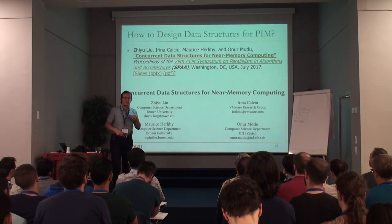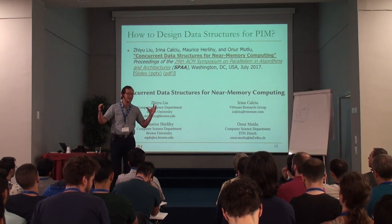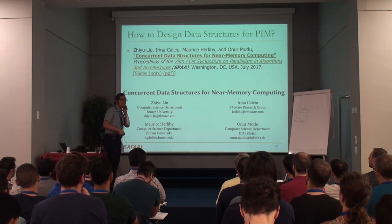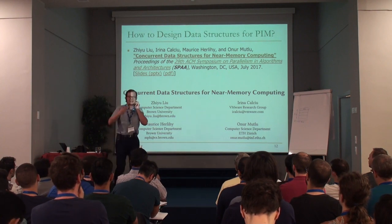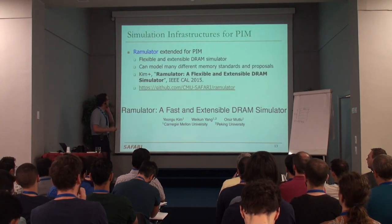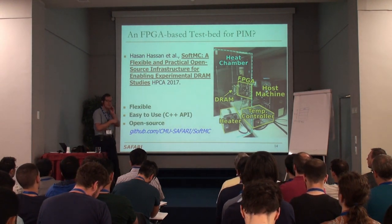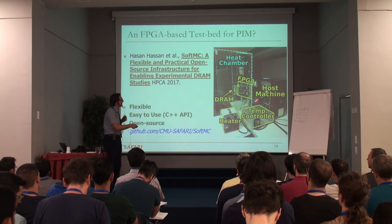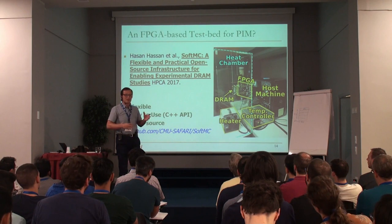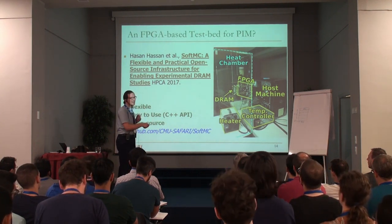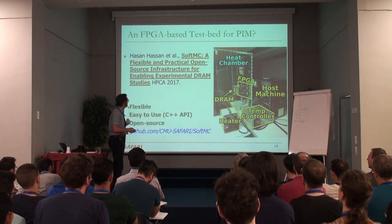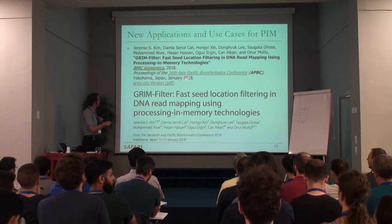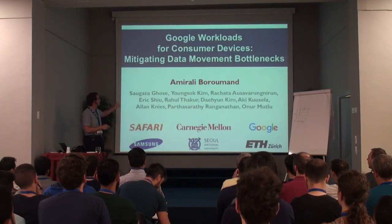We also need to think about data structures. Even in memory it's better if you parallelize your data structures. We need to think about how to design data structures that fit memory characteristics and the ability to do processing. We've been extending the SoftMC FPGA-based infrastructure for DRAM testing to processing in memory as well. You can't perfectly simulate PIM benefits on an FPGA, but you can have a higher-fidelity simulator by offloading some operations. Bioinformatics is one interesting application example.